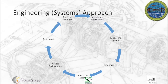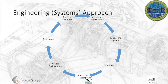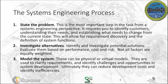When we think about that more visually, I like to think of it as a cycle. First, state the problem — joining at the top left of the circle. Then investigate alternatives, model the system, integrate, launch that system, assess its performance, and reevaluate. This goes in an endless loop until we've solved the problem, and often beyond, as the life cycle of a product may require tweaking when unanticipated issues arise.